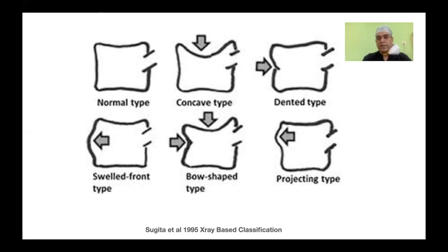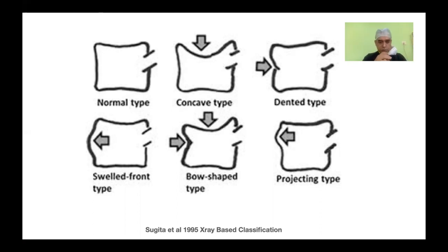This was initially propagated by Sugita et al. in 1995, which was an X-ray based classification. He classified the fractures into five types: normal type, swelled front type, bow-shaped type, projecting type, concave type, and dented type. All these morphologies can be seen on an X-ray and identified. According to their observations, patients with a swelled front, bow-shaped, or projecting type — these are malignant forms of osteoporotic vertical compression fractures, which could lead to further collapse, kyphotic deformity, and neurological involvement.